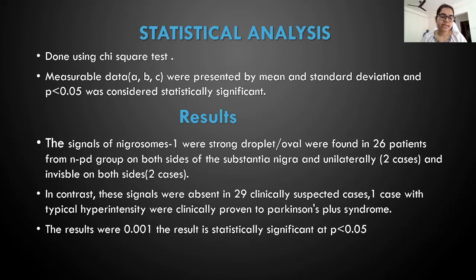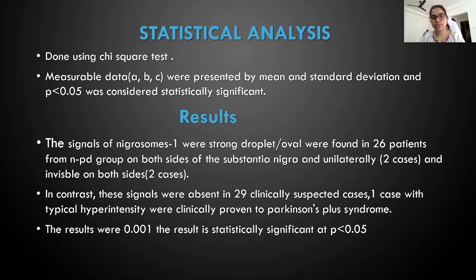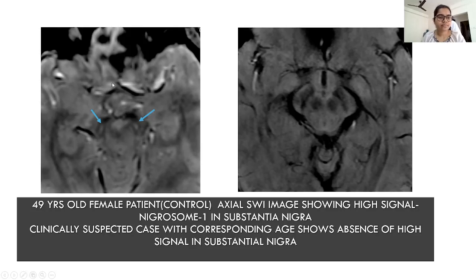Coming to the results, strong droplet or oval signals of nigrosome 1 were found in 26 patients from the non-Parkinson's group on both sides of the substantia nigra, unilaterally in two cases, and invisible in both sites in two cases. In contrast, these signals were absent in 29 clinically suspected cases, and one case with atypical hyperintensity was clinically proven to be Parkinson's plus syndrome. The p-value was 0.001, which is statistically significant. Here is a 49-year-old female control axial SWI image showing high signal nigrosomes in the substantia nigra indicated with blue arrows. A same age-group clinically suspected Parkinson's patient shows absence of high signal in the substantia nigra on either side.